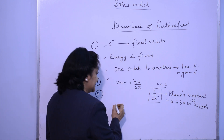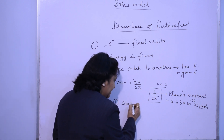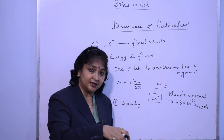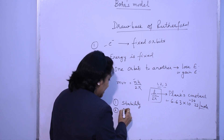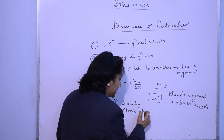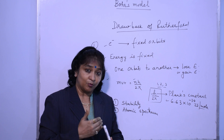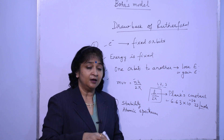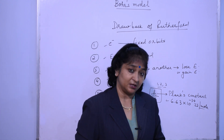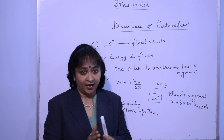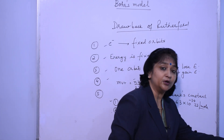So this is Bohr's model — what were its positive sides? It explained the stability of the atom: why electrons do not go inside the nucleus and why the atom is stable, because they are moving in fixed orbits. Second, he was able to explain the atomic spectrum. Both these things were explained by Bohr — how the atom is stable and the atomic spectrum — which is why Bohr's model was a more acceptable model. So that covers Rutherford's and Bohr's models; next we will come to Planck's theory of radiation.